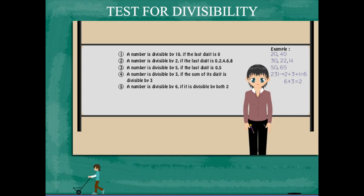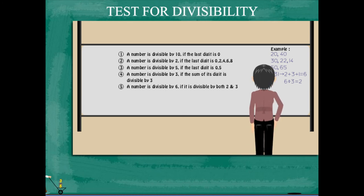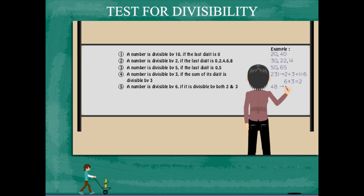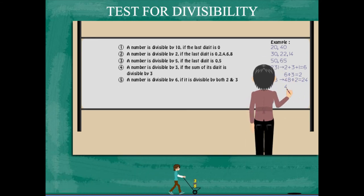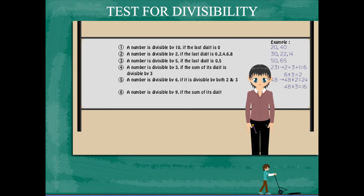A number is divisible by 6 if it is divisible by both 2 and 3. Example is 48: 2 divides 48 and 3 also divides 48 completely. A number is divisible by 9 if the sum of its digits is divisible by 9.